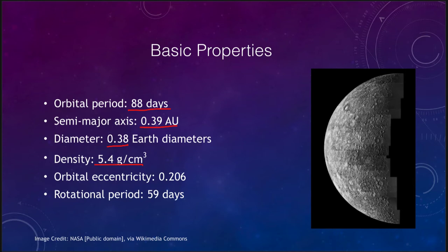That similar density tells us there is a very high concentration of metallic materials. Its orbital eccentricity — how squashed its orbit is — is about 0.2, which is the largest eccentricity among the major planets. And its rotational period is 59 days, meaning it takes 59 days to spin on its axis once relative to the stars.